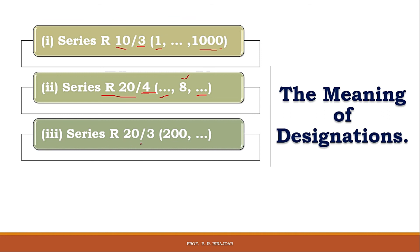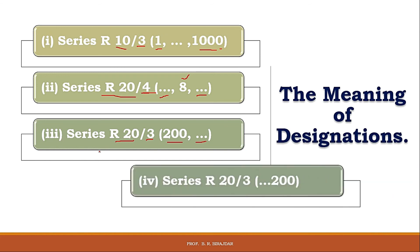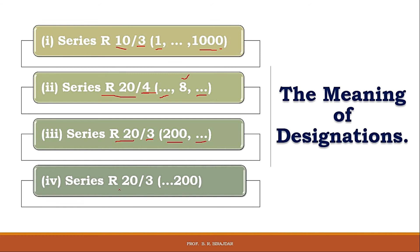The third notation is R20/3 (200…), meaning every third term of the R20 series with a lower limit of 200 and no upper limit. A fourth variant specifies an upper limit instead: the largest value is 200 and the lowest value can be considered as 15, with no lower limit specified. These are the meanings and designations of the different derived series notations.